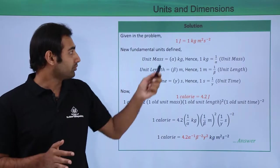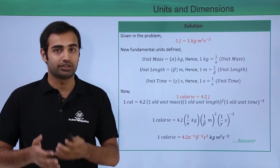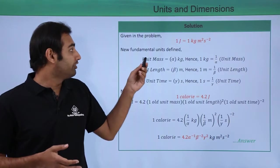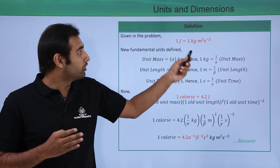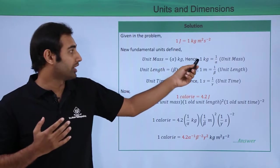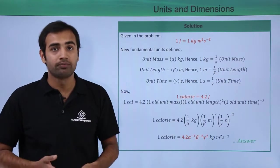So over here you can see, 1 Joule is defined as 1 kg meter square per second square, that's what the question gave us. So we will go back and consider the new unit mass, which is alpha kg. So if I have to put the value of 1 kg in this original equation, I can write 1 kg as 1 by alpha times the new unit mass defined, correct?